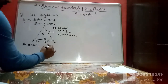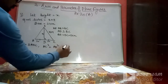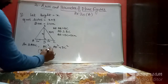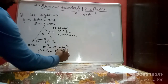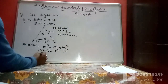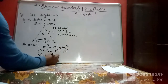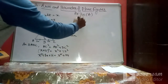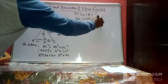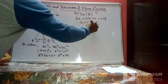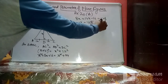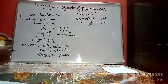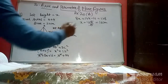Using Pythagoras theorem in triangle ADC: AC² = AD² + DC², so (x+4)² = x² + 12². This gives x² + 8x + 16 = x² + 144, so 8x = 128, meaning x = 16 cm.